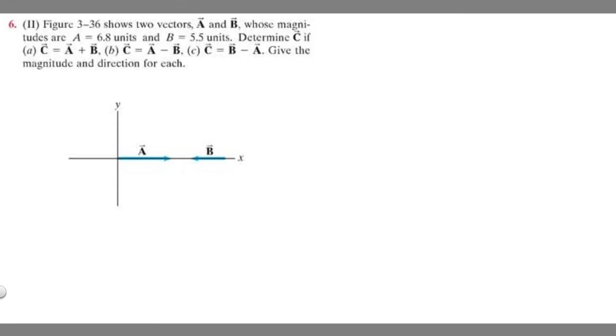In this problem, we're given two vectors A and B, whose magnitudes are A equals 6.8 units and B equals 5.5 units. We're told to determine C if A, and then we're given A, B, and C with different criteria. Then we're told to give the magnitude and direction for each.